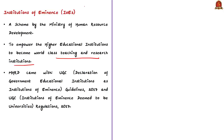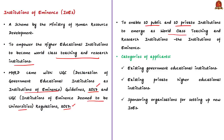In 2017, the Ministry of Human Resource Development issued the UGC Declaration of Government Educational Institutions as Institutions of Eminence Guidelines 2017 and UGC Institutions of Eminence Deemed to be Universities Regulations 2017. Both regulations were aimed to enable 10 public and 10 private institutions to emerge as world-class teaching and research institutions, to be called Institutions of Eminence. Applications for institutions to become Institutions of Eminence are invited under three categories: existing government educational institutions, existing private higher educational institutions, and sponsoring organizations for setting up new institutions.